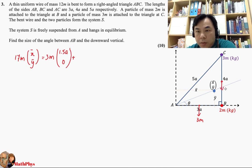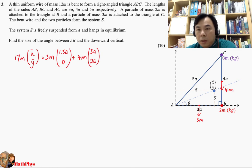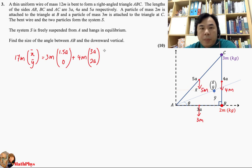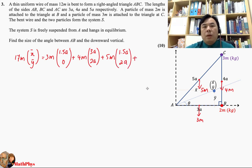The wire BC has mass 4M and its center is located at (3A, 2A) from A. Next, the thin wire AC has mass 5M and its center is located at (1.5A, 2A) from A.